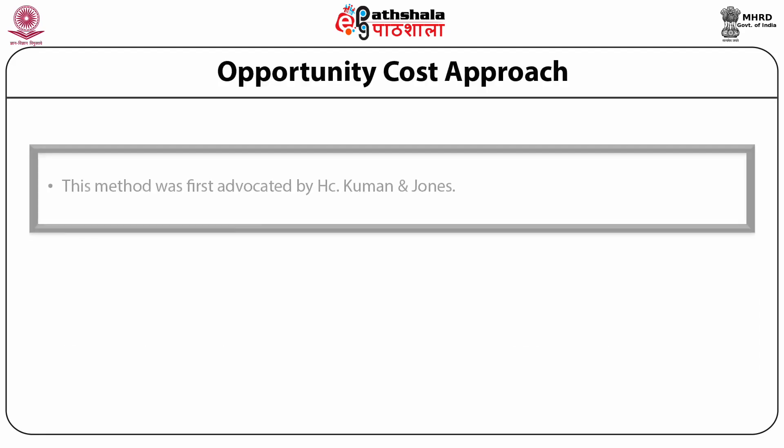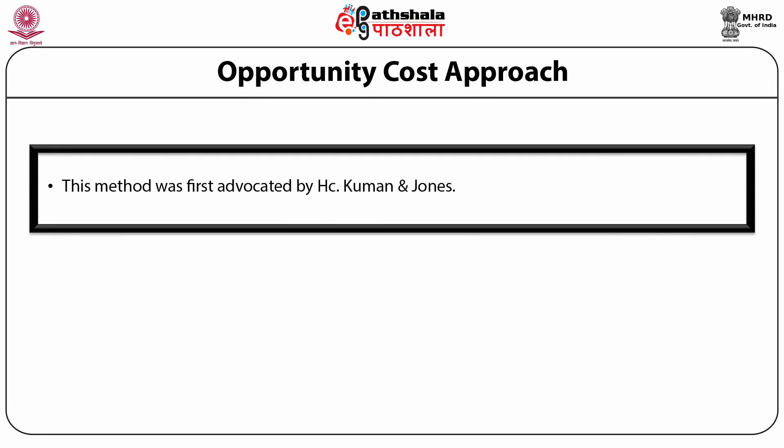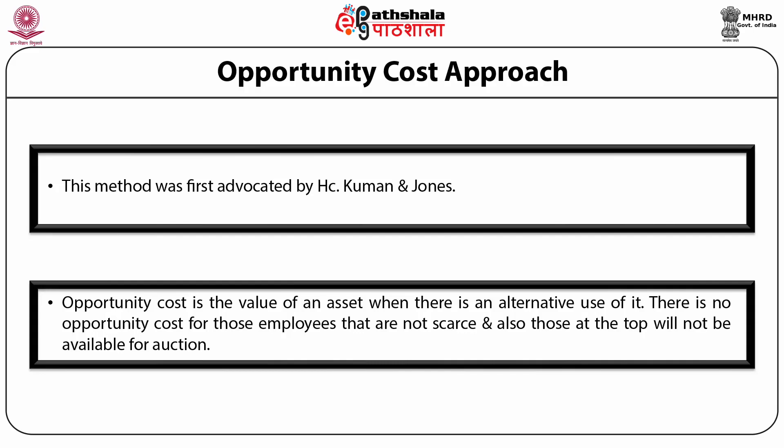Opportunity cost approach. This method was first advocated by H.C. Kimmin and Jones for a company with several divisional heads bidding for the services of various people they need among themselves, and they include the bid price in the investment cost. Opportunity cost is the value of an asset when there is an alternative use of it. There is no opportunity cost for those employees that are not scarce. As such, only scarce people should comprise the value of human resources. This method can work for some people at shop floor and middle order management. The author believes that a bidding process such as this is a promising approach toward more optimal allocation of personnel.